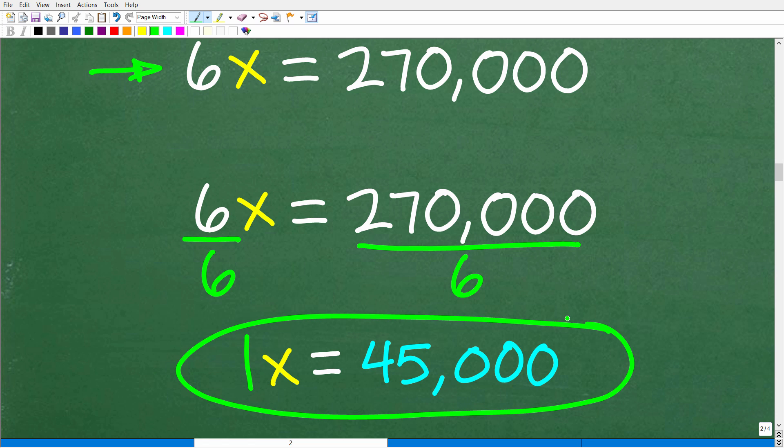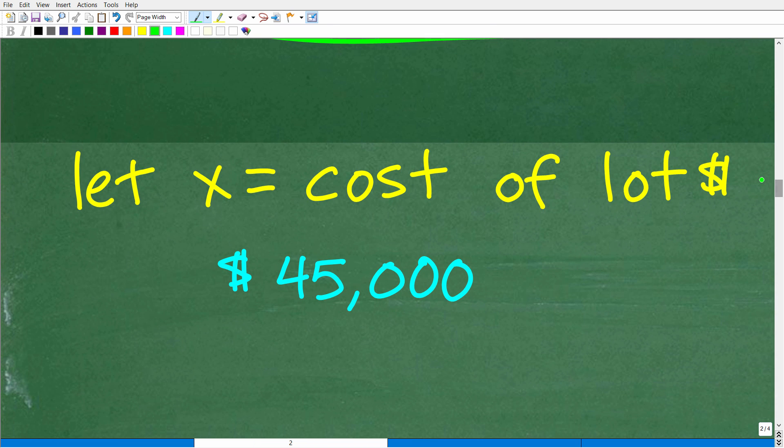At this point in the problem, we solved for x, but a lot of students get super excited - yes, I solved the equation, here is what x is equal to. You've got to be very careful because the last step in solving a word problem where you have variables is to make sure that you answer the question. We have to go back and review - what is x equal to? x is equal to the cost of the lot, and that is the question. The question in this problem is what is the cost of the lot? That is what x is equal to, and we solved for x. So that is $45,000.